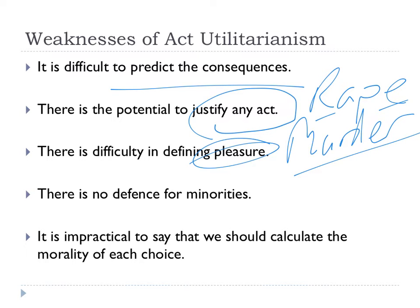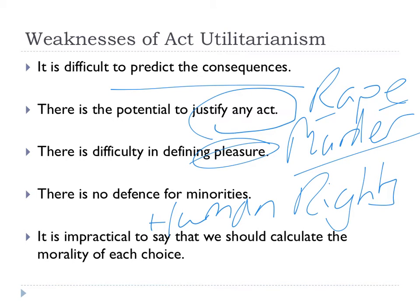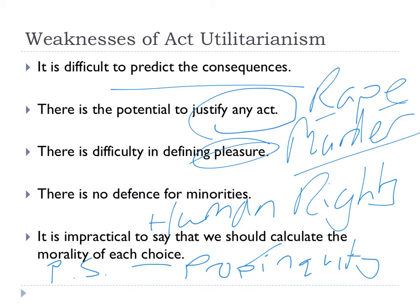One weakness is that we might want to be more specific about what we mean by pleasure. Another is that it rejects the defence for minorities — so what about human rights? Surely Mill does a better job of protecting human rights. You could say it's impractical to calculate the morality of each choice, but I think it's much more intelligent to pick a specific feature of the hedonic calculus and argue that that feature is perhaps not very useful. For example, you might say that propinquity — how near you are to a situation — shouldn't matter. It doesn't matter to Peter Singer, who says: what morally relevant difference does it make how near we are to a situation?